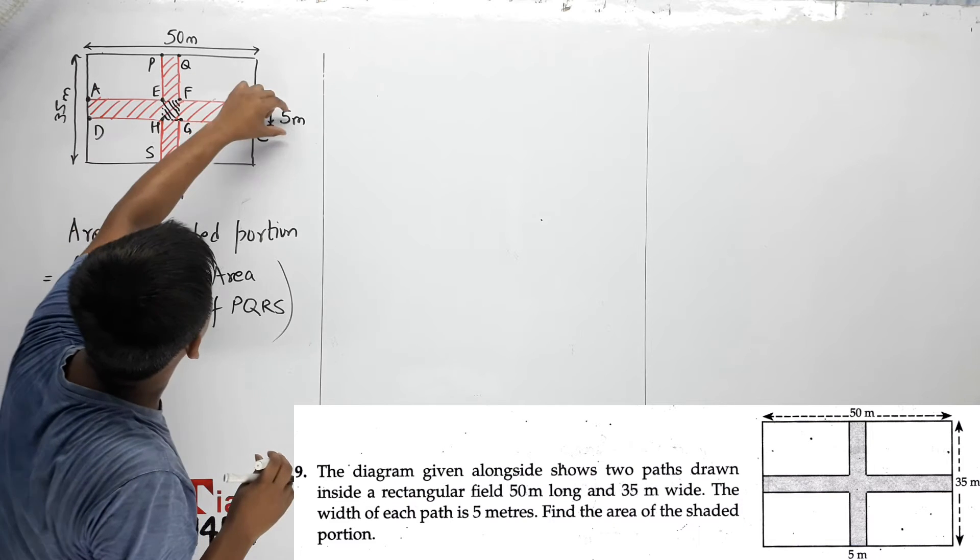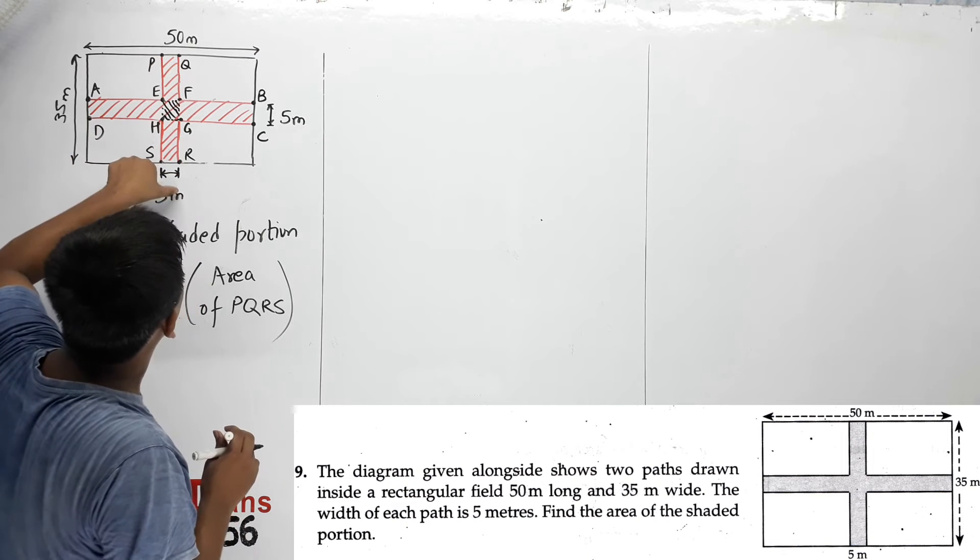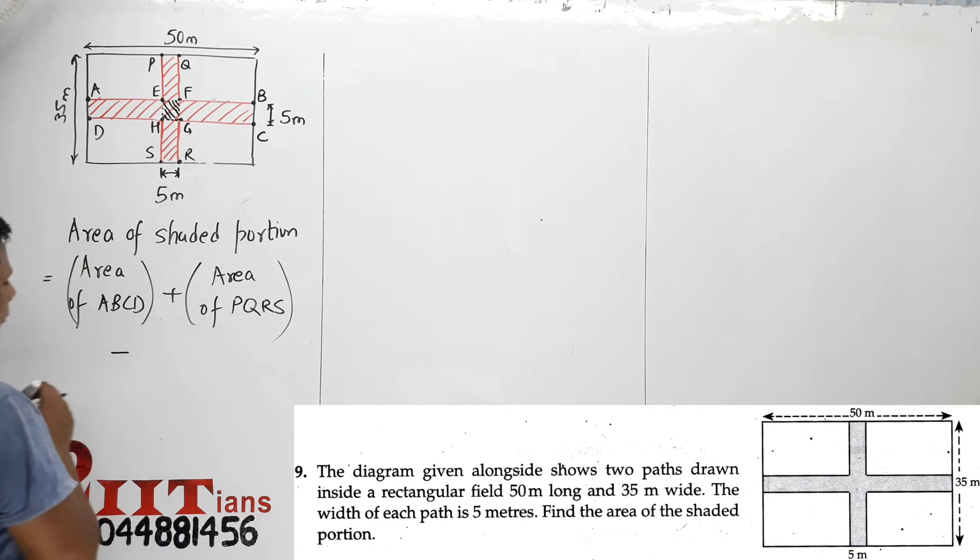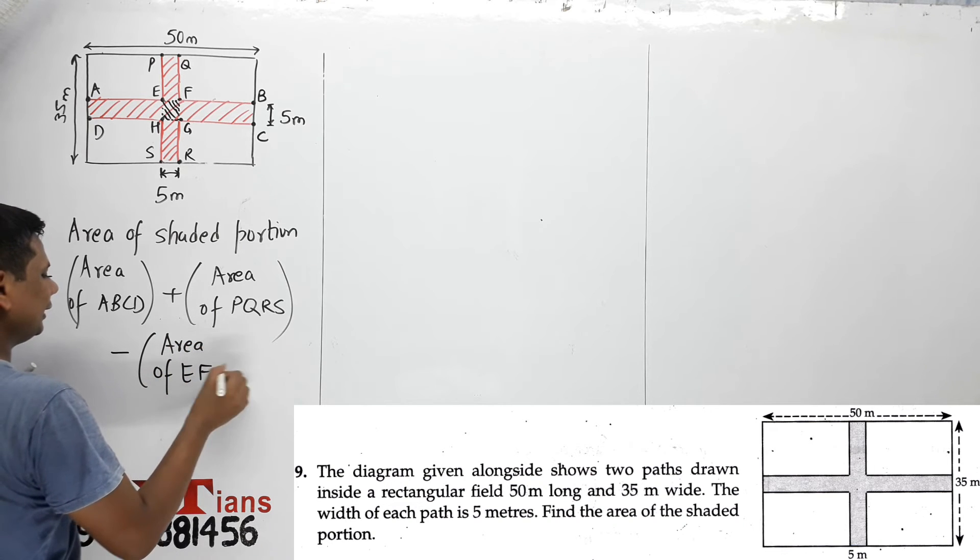It needs to be covered once, right? It came in ABCD and came again in PQRS. So since it came twice, subtract EFGH. Minus area of rectangle EFGH.